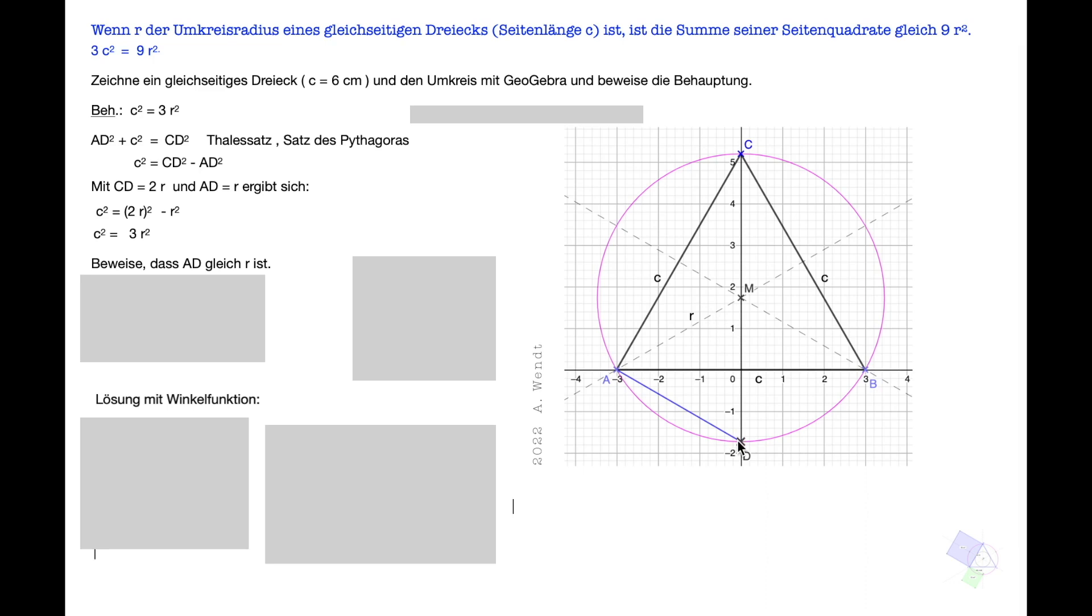Jetzt schauen wir uns dieses Dreieck an und überlegen, wie groß dieser Winkel ist. Die Höhe halbiert ja die Seite und den Winkel von diesem Dreieck. Also haben wir hier 60 Grad. Damit haben wir hier ein Dreieck mit dem Winkel 60 Grad. Ich habe das Dreieck hier nochmal gezeichnet.